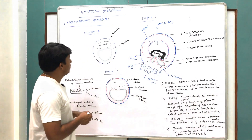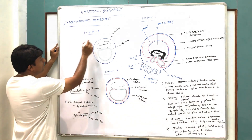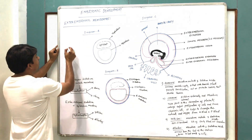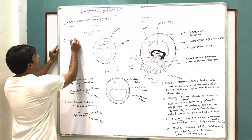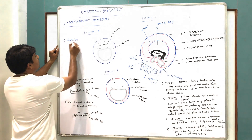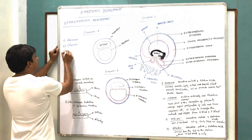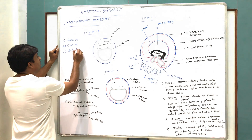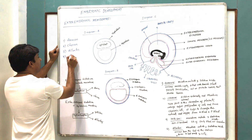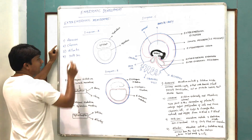These four extra-embryonic membranes are formed in the development of the mammal, which includes: number one, amnion; chorion; allantois; and yolk sac.